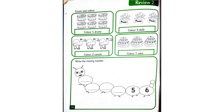Okay, KG1. In page 14 in the play and learn book, we are going to color and count. First, color four drums. One, two, three, four. Great. Next, color three dolls. One, two, three. Color two camels. One, two. Okay. Color only one cake. One. Great job, KG1.